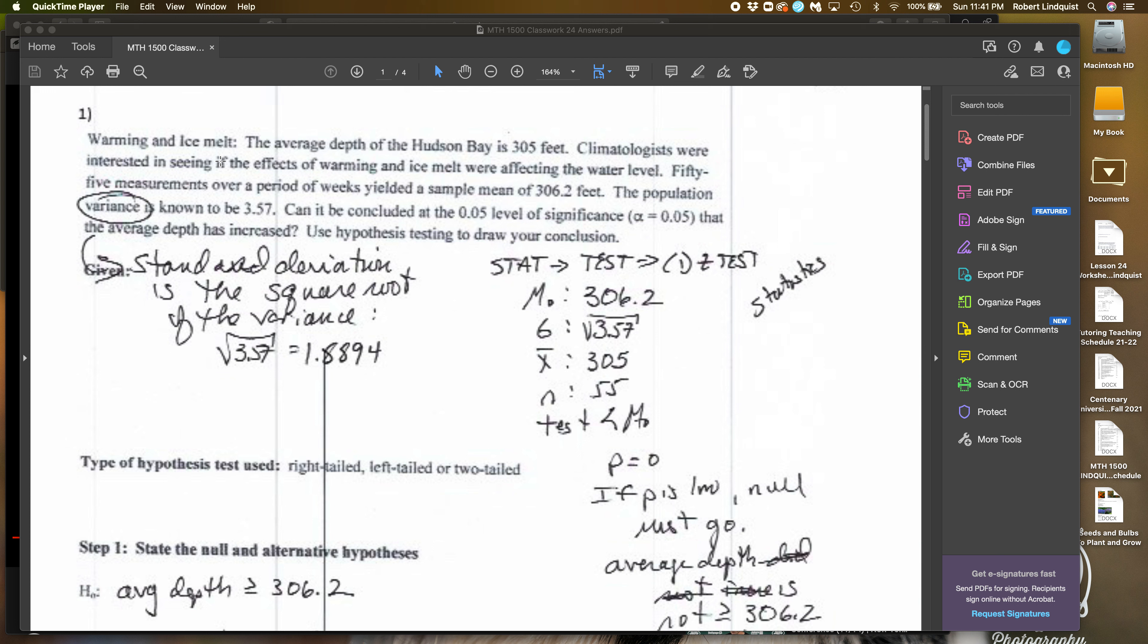First thing I want to do is take a little step back in time and just mention variance. We haven't talked much about it this year, but variance is, to find the standard deviation, you take the square root of the variance.